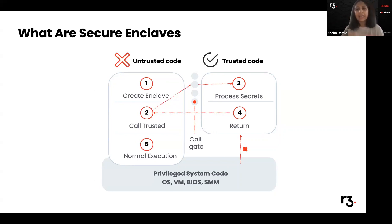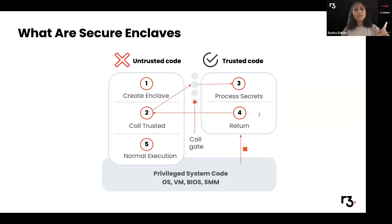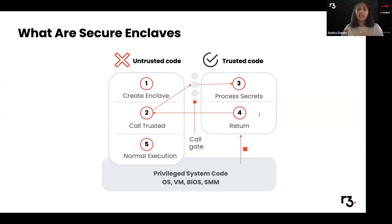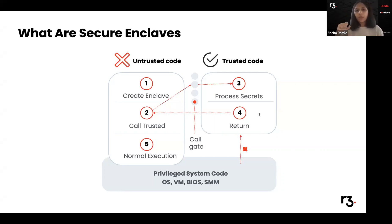A secure enclave is nothing but a protected region of memory. Hardware protections isolate computations in the enclave from all programs on the same host, including the operating system. Conclave uses confidential computing technology — the trusted execution environment — and employs a technology called remote attestation, which is basically a digital signature over your enclave code that the remote party or clients can verify at their end.